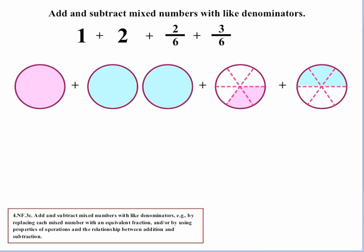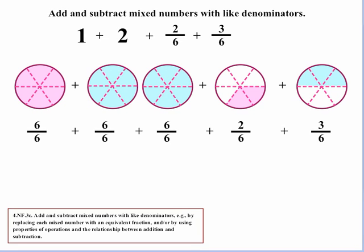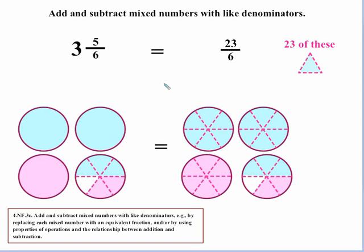We can also approach the same problem strictly from a fractional standpoint by converting all the wholes into sixths. Counting up we get 23/6. Students can compare why 3 and 5/6 and 23/6 are equivalent: the main difference is that the 3 wholes are split into their fractional parts. All the pieces are still 1/6 each — we just have 23 of them.